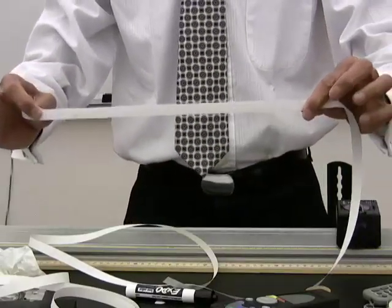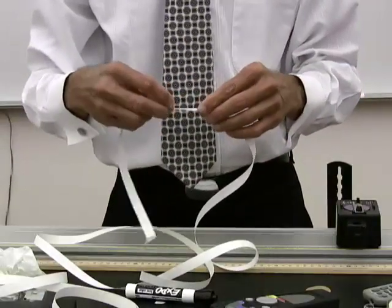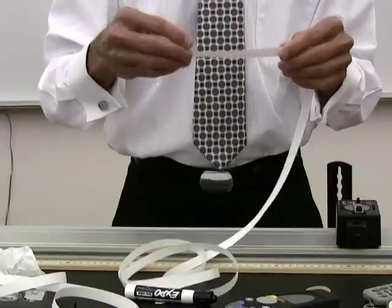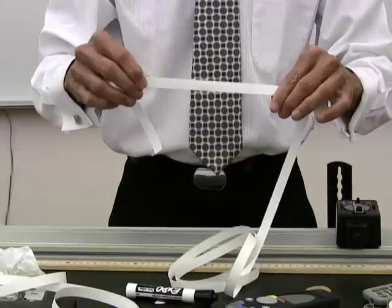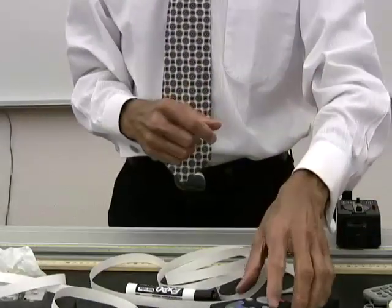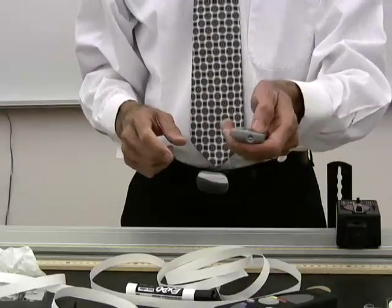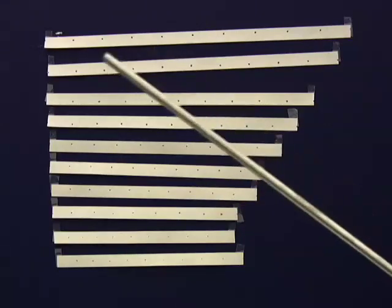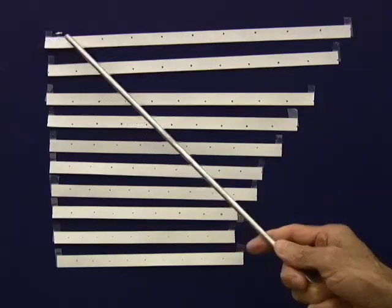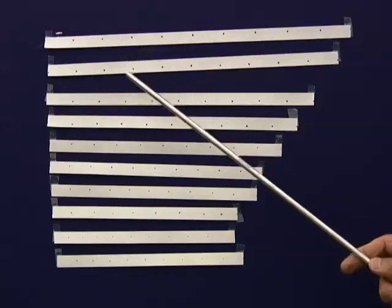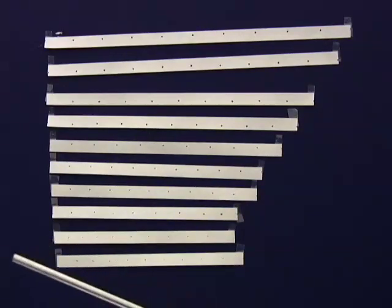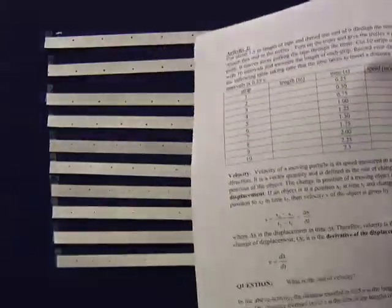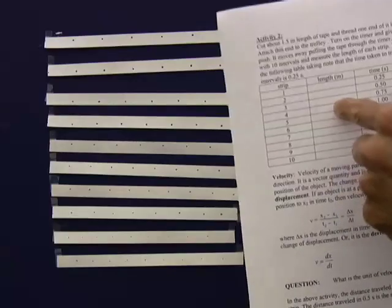Now what are we supposed to do? Cut 10 strips of tape with 10 intervals each. I'm going to count the first 10 and make my first strip, the next 10 for my second strip, and so on. I'm going to cut them and paste them so that you can take measurements. Here I have the 10 strips of paper. Use your ruler to measure the length of each strip — strip 1 through strip 10. Pause the video and measure the length and enter it in your table.